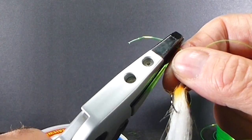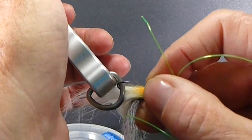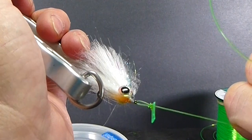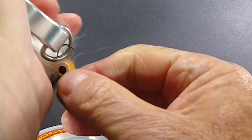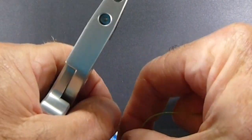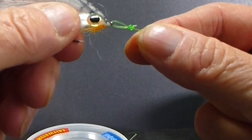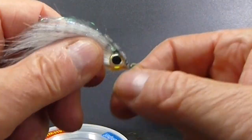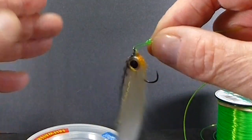And snug that up with your pliers. Take these pliers that have a little ring in them. Make sure you're careful of that. And then snug it up tight. And that's an improved Homer Rhode. Nice little knot. Nice loop knot for you. Gives you all the movement you need with a heavy bite tippet.